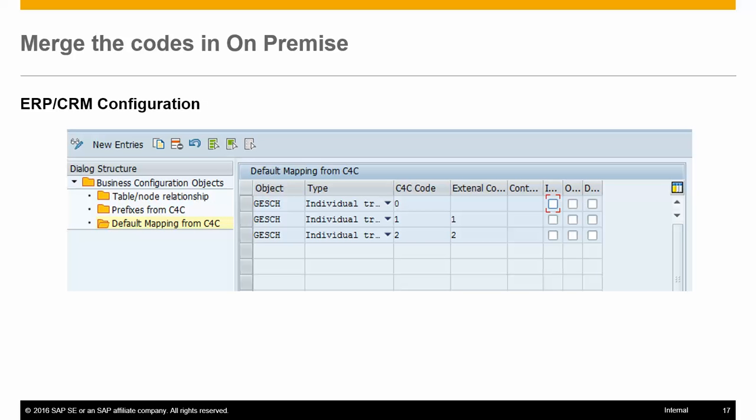To check the values of the default mapping to C4C, you need to select a particular code list and click on 'Default Mapping from C4C.' Here you maintain the C4C code to which an external code is to be mapped. You can maintain default mappings manually if a particular code in ERP needs to be mapped to a specific code in C4C. Ensure that the code list exists in C4C before the upload. Default mapping can also be maintained for codes where the map type is 'Merge ERP Codes.'